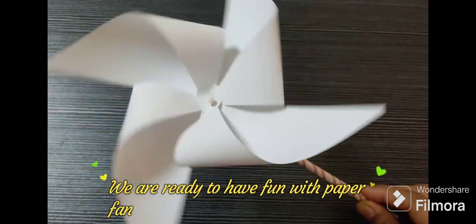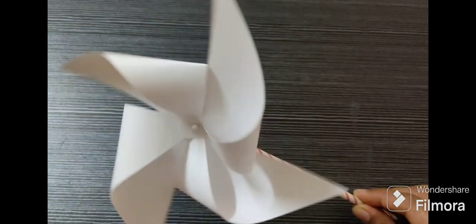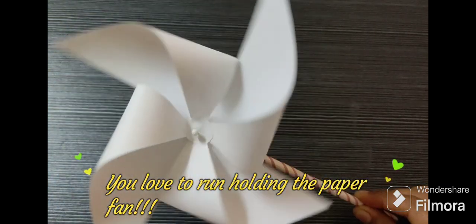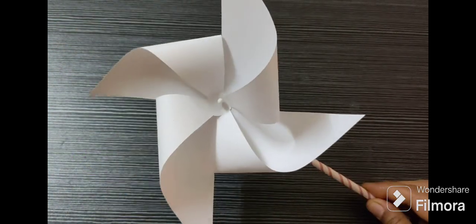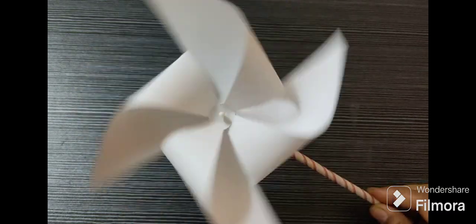That's it, we are ready with the fan. Now run holding the fan straight. Wow, the paper windmill is spinning. You can make the fan spin by blowing air to the center.